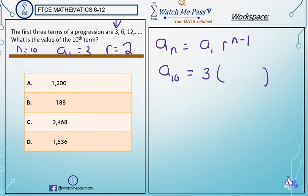Now the r is 2 and then n minus 1. 10 is n minus 1. So a sub 10 equals 3 times 2, 10 minus 1 is 9.